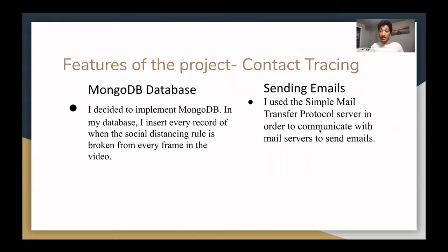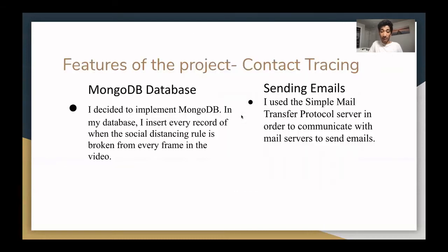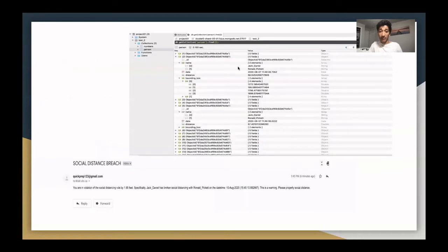Finally comes the most important feature of the project: contact tracing. There are two things that need to be done for contact tracing. The first is a MongoDB database, and the second is sending an email to all of the users that broke social distancing. I insert every record of when the social distancing rule is broken from every frame in the video. Here is an example of the database. Here is one instance of when social distancing was broken in one frame — you can see the distance at which it was broken, the people that broke it, and the date it was logged. Jack Daniel broke it with Ronald Pickett in that frame.